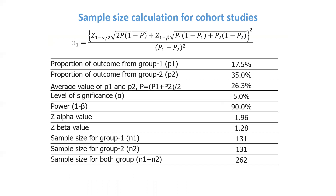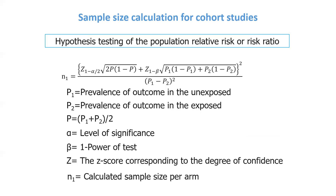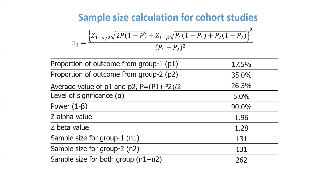The proportion of the unexposed group is a hypothetical value. For example, p1 for the unexposed group — the prevalence of 70% — is obtained from a literature review. And for the exposed group, the prevalence is 25%, based on our hypothesis.